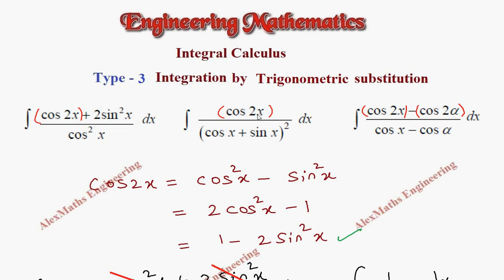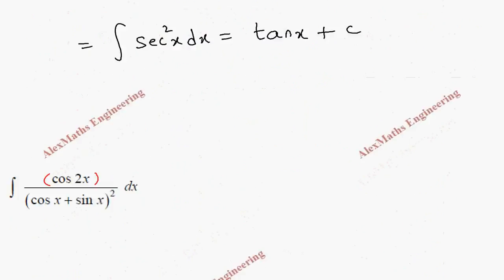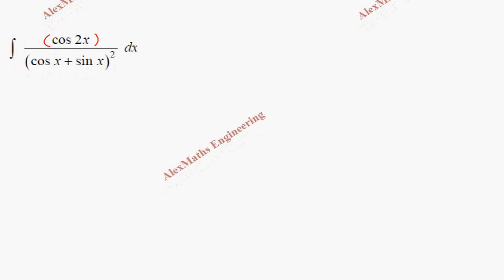Coming to the second problem, we have cos 2x in the numerator but in the denominator we have cos x + sin x. It is better to use the first formula because it has both sine and cosine terms, so we are going to replace the numerator by cos²x − sin²x.